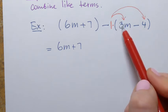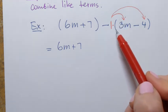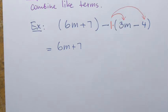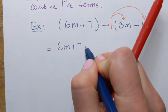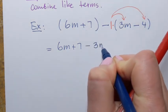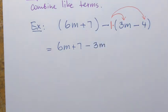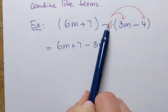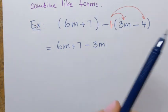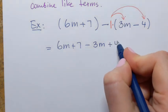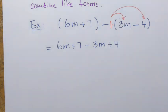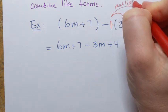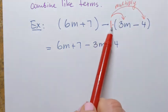So negative 1 times 3m: negative 1 times 3 is negative 3, so I write minus 3m. And next, negative 1 times negative 4 — negative times negative is positive — so it's plus 4. That's called the distributive property. In this case we have to multiply by negative 1.